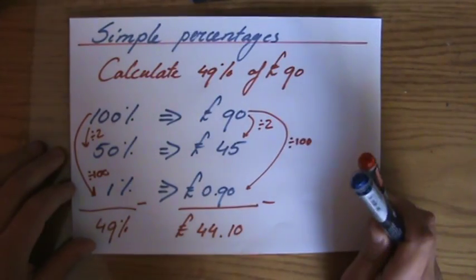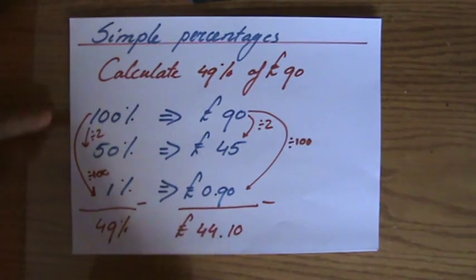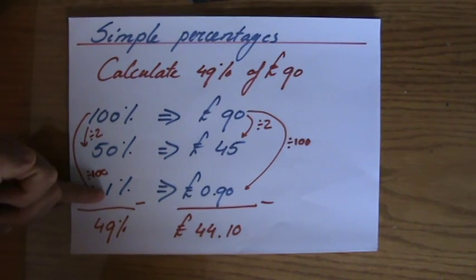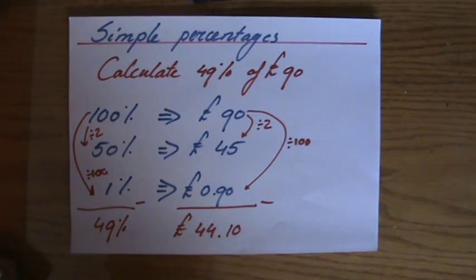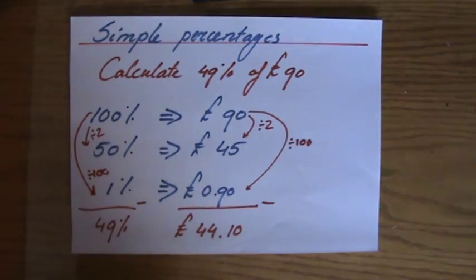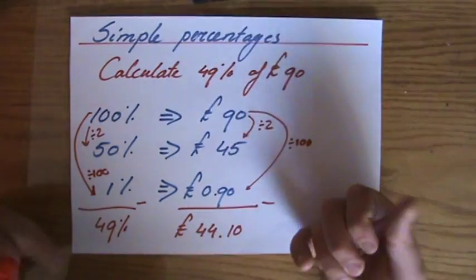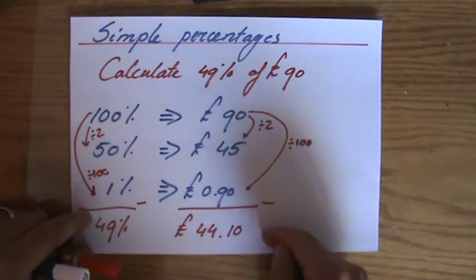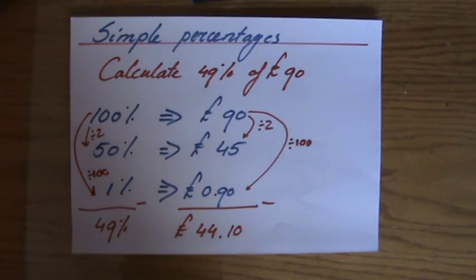And there are more ways of doing it. This is just one way: find 50%, take away 1%, then you will have 49%. So divide it by 2 for 50%, divided by 100 to take 1%, and then you subtract to get 44 pounds and 10 cents.